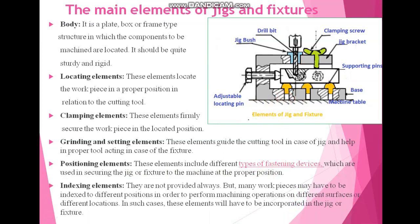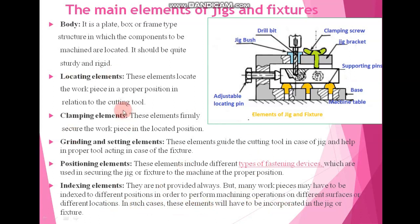Last, we have indexing elements. These indexing elements are not provided always, but in many workpieces they may have to be indexed to different positions in order to perform the machining operation on different surfaces or different locations. In such cases, these elements will have to be incorporated in the jig and fixture. This is what about the main elements of jig and fixture.